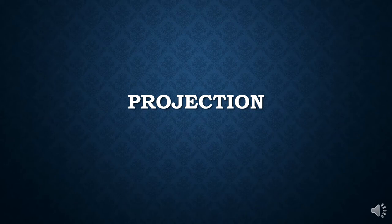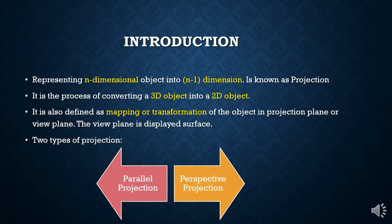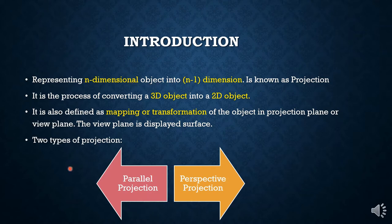Hi students, welcome back to computer graphics. Today's topic is on projection. By the end of this chapter, you'll be able to understand what projection is, the several types of projection, and distinguish between them. So, projection is representing an n-dimensional object into n-minus-1 dimensions. You have to remember that — it is simply representing an n-dimensional object into n-minus-1 dimensions. Suppose you take a 3D object: